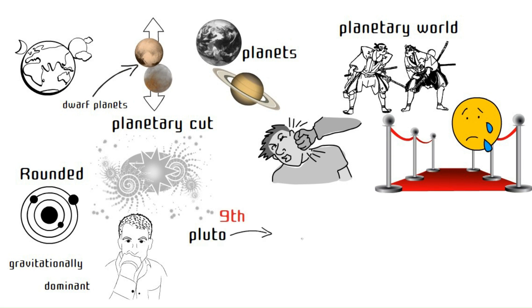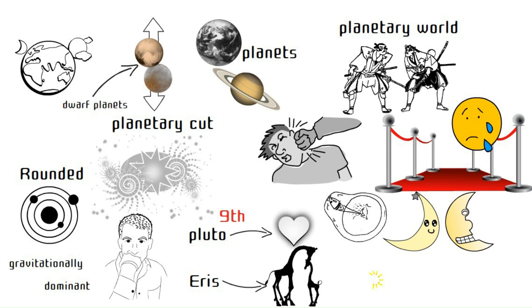Pluto, the dethroned ninth planet, boasts a heart-shaped ice plane, a thin atmosphere, and intriguing moons. Eris, another contender, might be bigger than Pluto, but its distant icy orbit makes it a frosty proposition for any visitor.